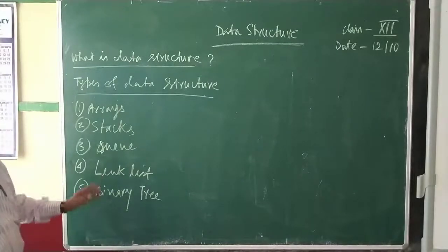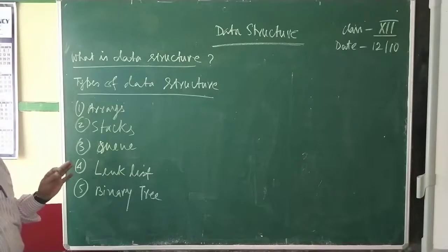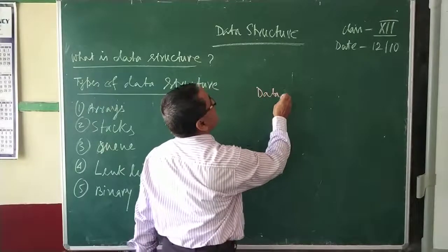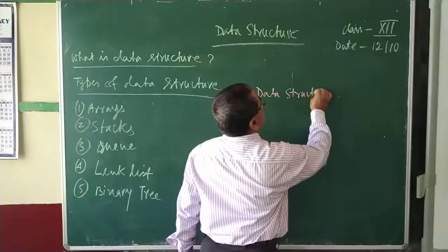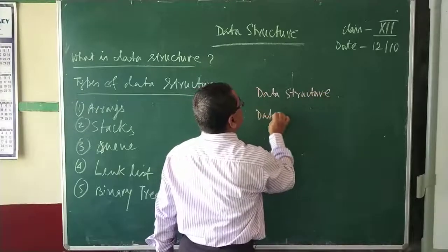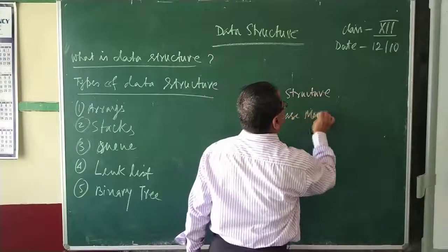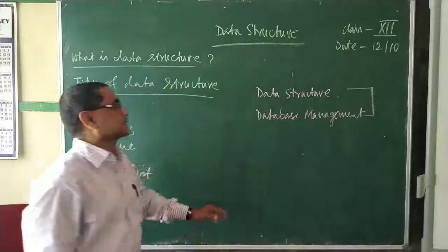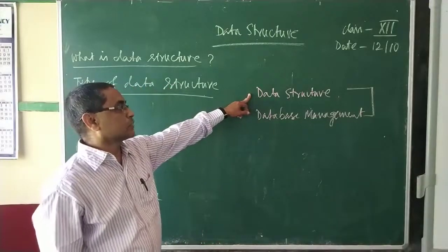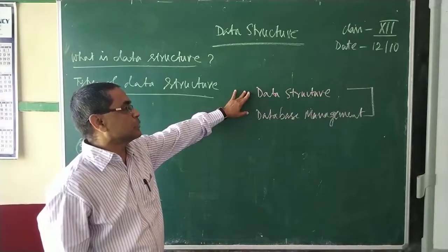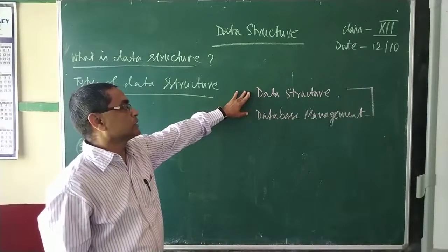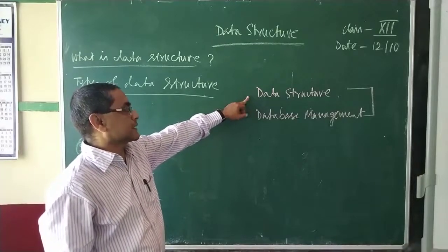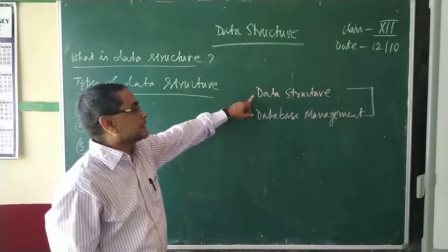First we have to know what is data structure — that is the main basic thing. There are two things: one is data structure and another one is database management. These two are closely related because data structure also deals with many data — not single data. Data manipulation, file handling, all these things where a lot of data is calculated or handled.